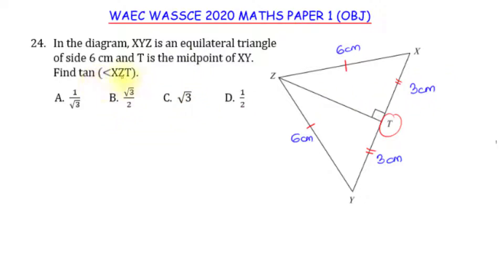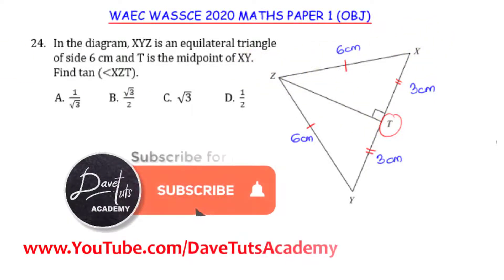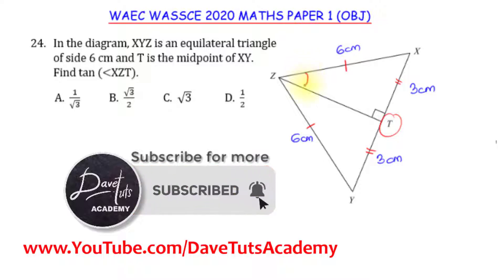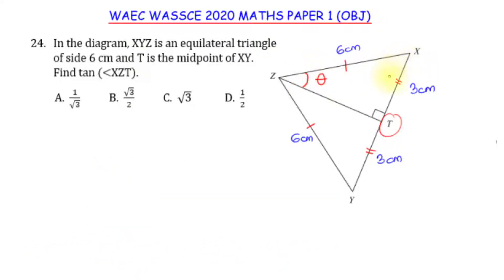We have to find the tangent of angle XZT. So the angle we are looking for — let's call it theta — is at vertex Z. We can see that there is a right angle here, which means we can use the trigonometric identity SOHCAHTOA to find the tangent.